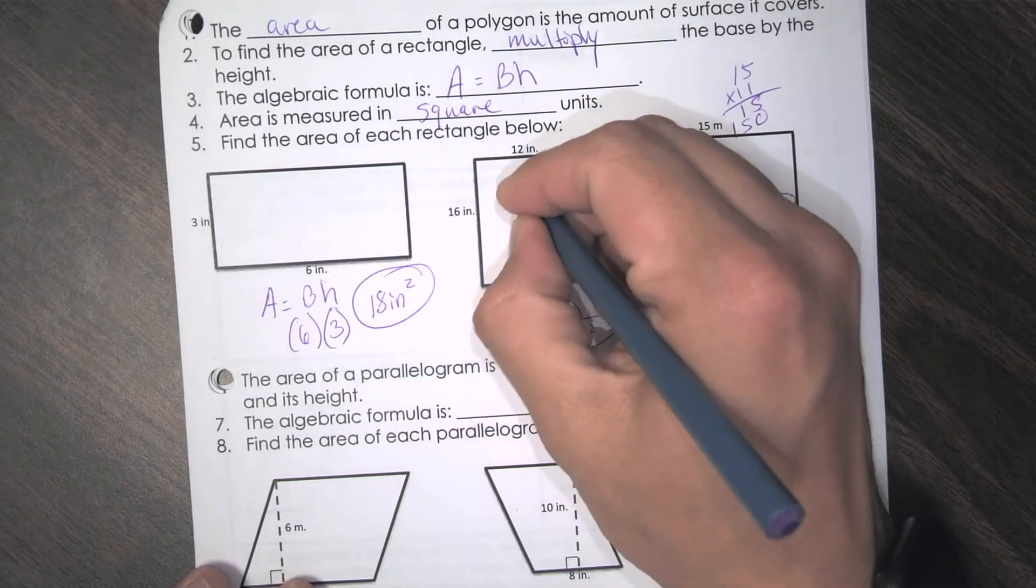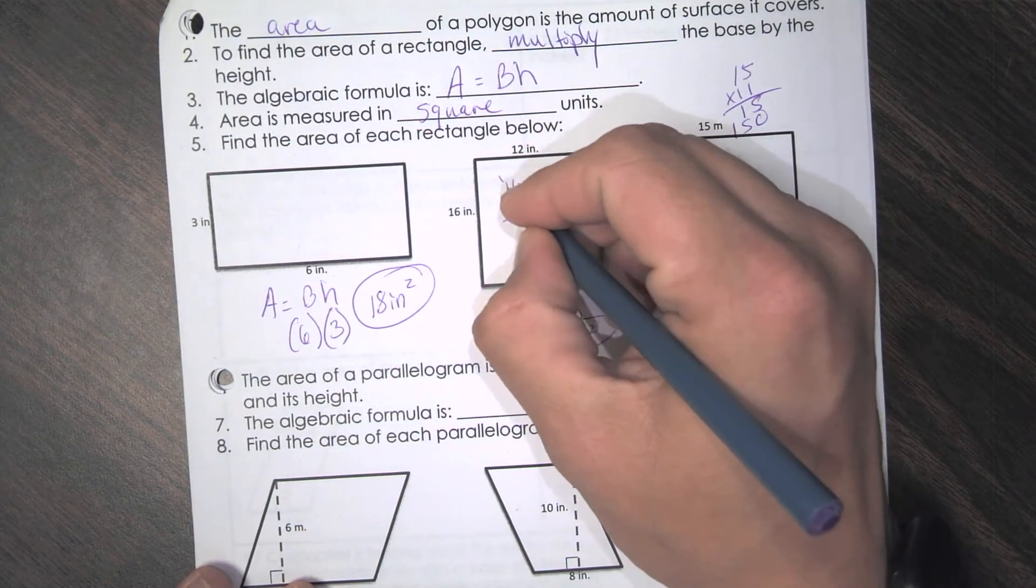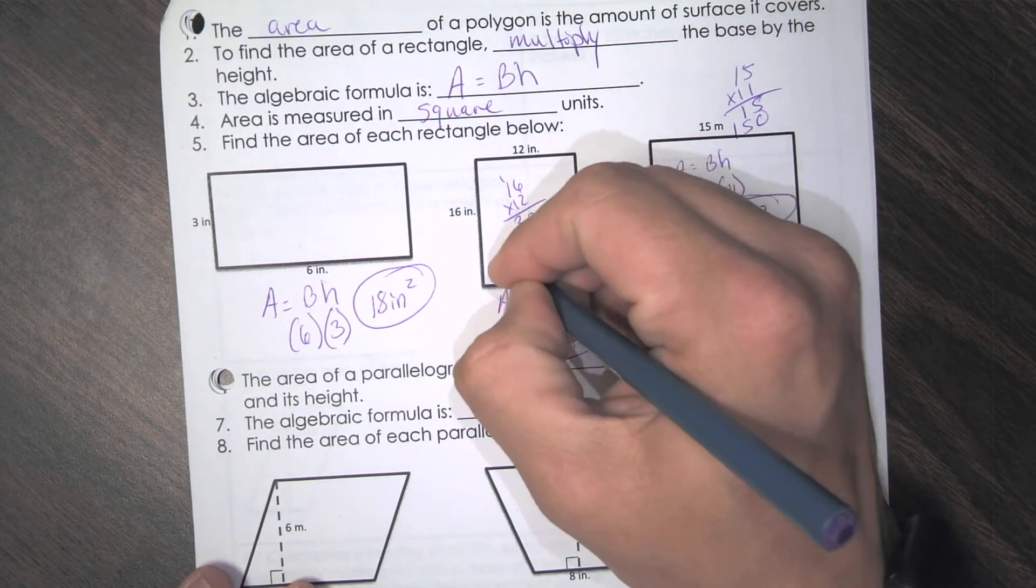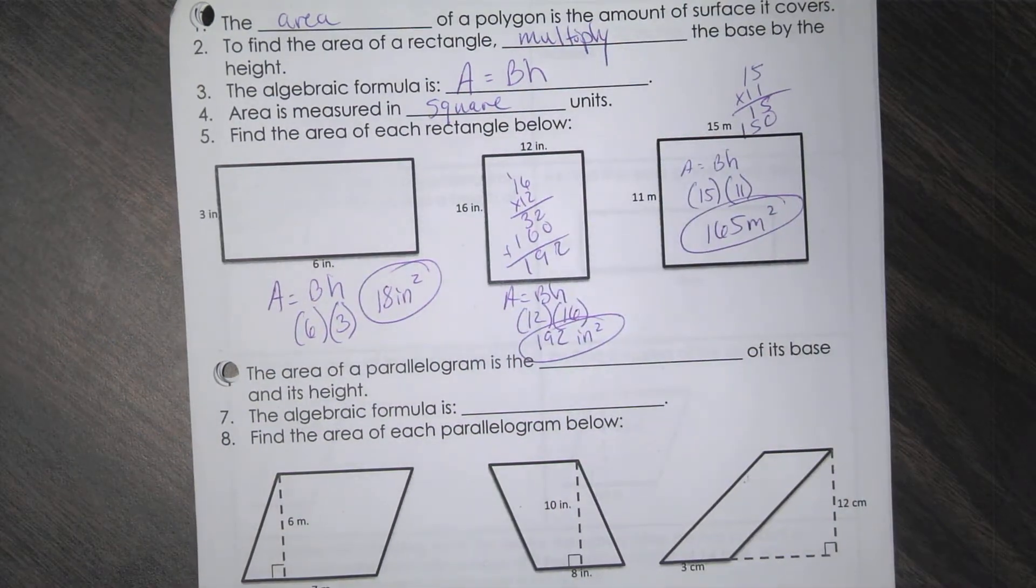So 16 times 12. 6 times 2 is 12. That would be 192. That's how it works. So that's multiplication. So that is rectangles.